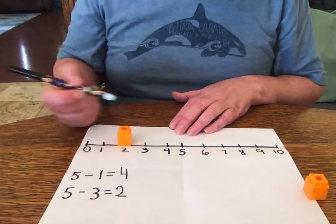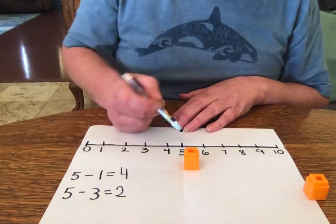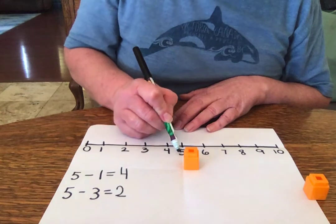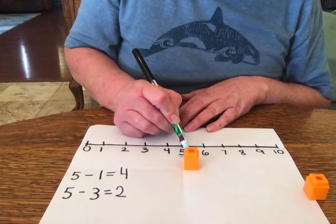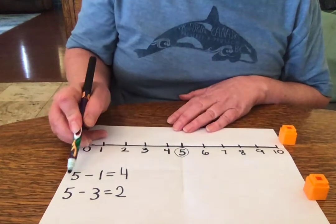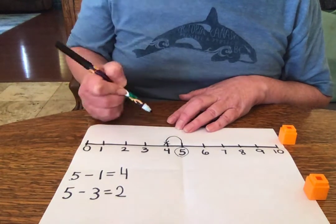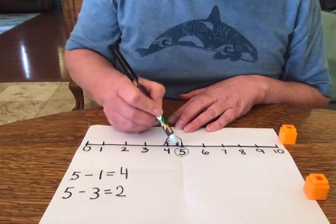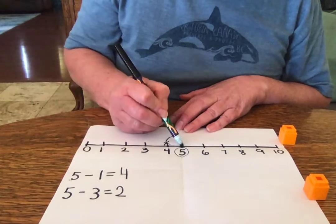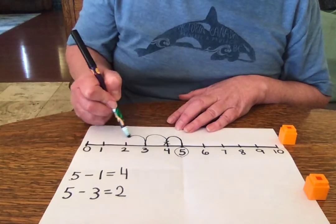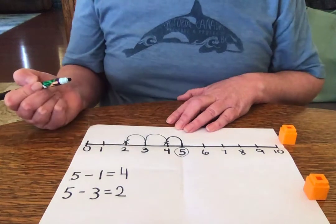When you're doing this on paper, you can actually, I always circle my numbers. So I circle the 5, right? Start with 5 here. Then I jump back 1 and then I put an X and land on 4. On here, I circle 5 and I jump 3. 1, 2, 3. And I put an X here and I land on 2.